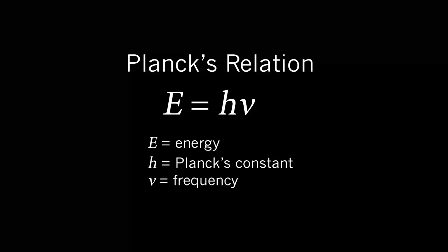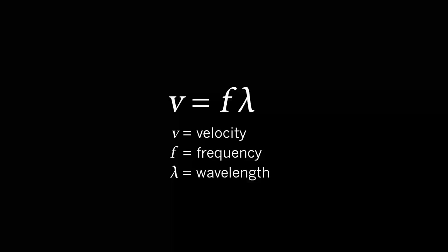Since we know that frequency times wavelength is speed—if I say there are three oscillations per second and each one is a meter long, that means it's traveling at three meters per second—I can write λ, the wavelength, times the frequency, ν, is equal to the speed of light, c, in the case of light.